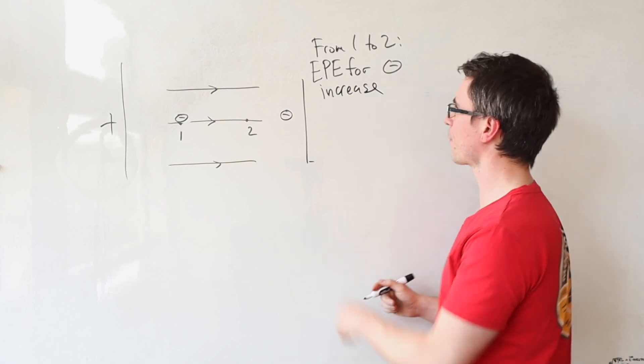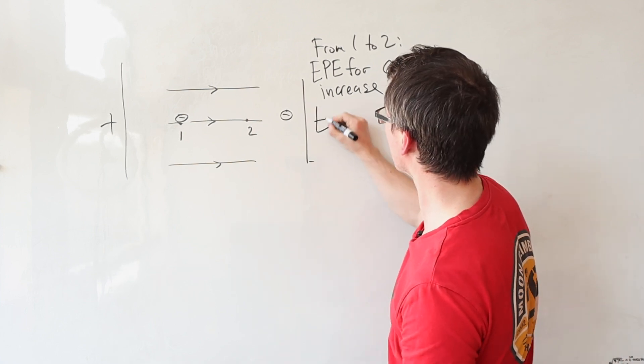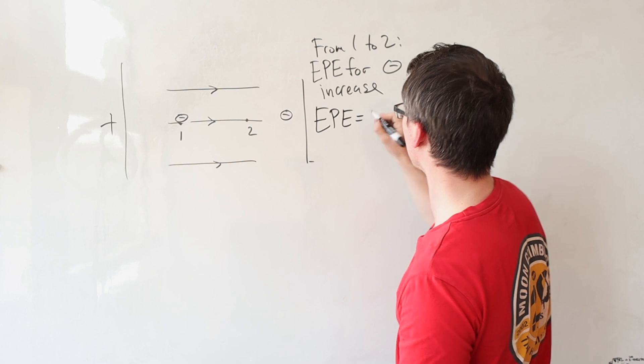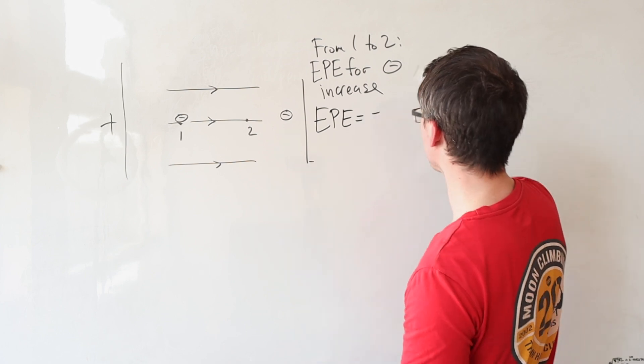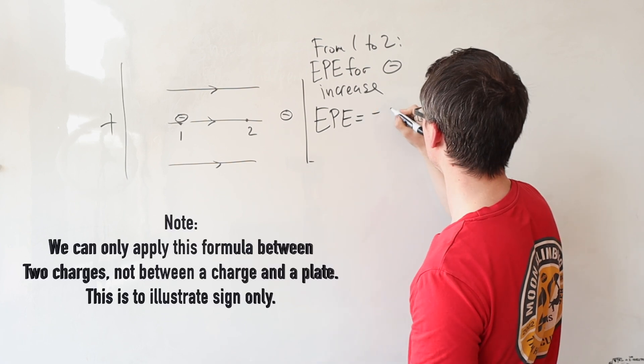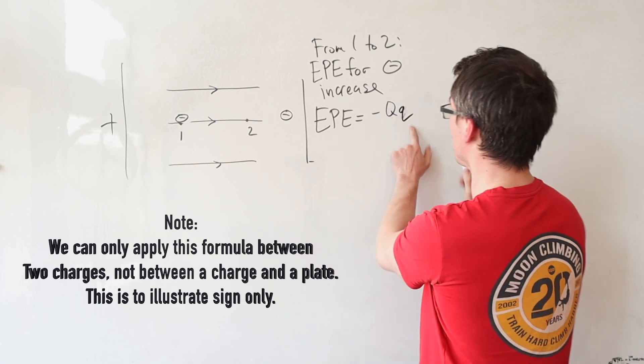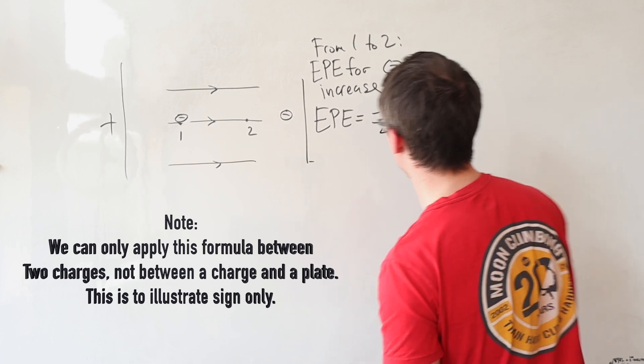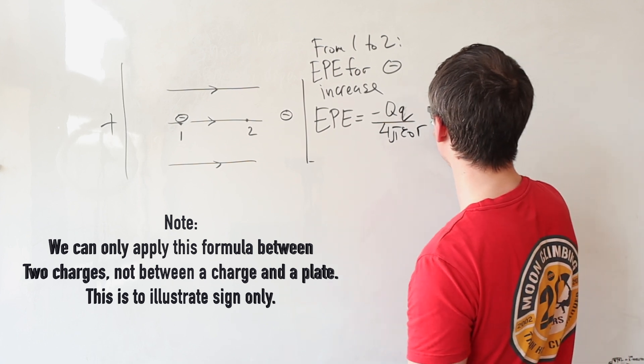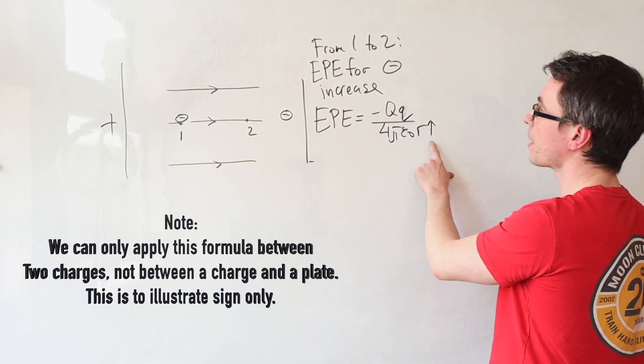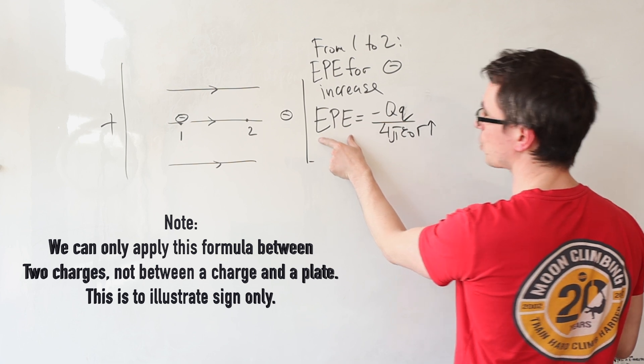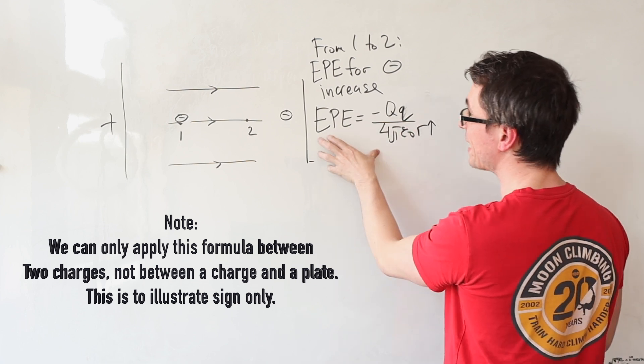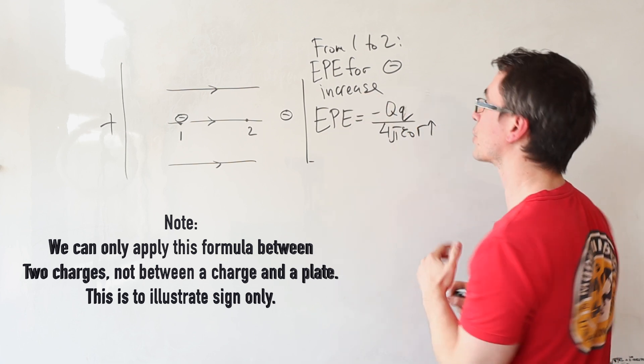Well how can that be mathematically? Well the electric potential energy is now a negative quantity. Let's say if these were individual charges we can just use minus qq over four pi epsilon not r, so as r increases, well this electric potential energy becomes less and less negative, meaning that it's actually increasing.